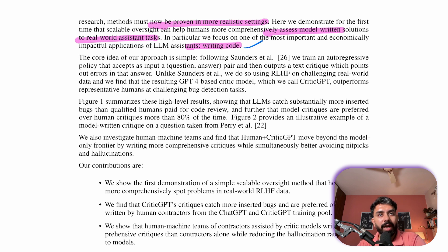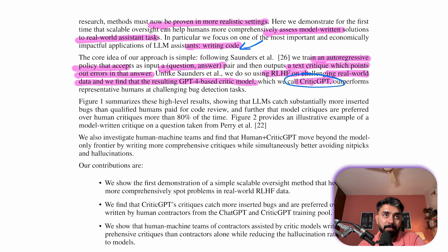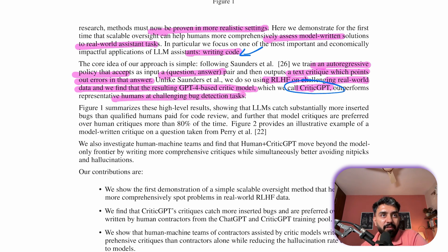For the first time, the research demonstrates that scalable oversight can help humans more comprehensively assess these solutions, particularly in writing code. The core idea here is simple: they trained an auto-regressive policy to take a question and answer pair and then output a text critique pointing out errors using RLHF on challenging real world data. So they developed a GPT-4 based critic model which is called CriticGPT which outperforms humans at detecting bugs.